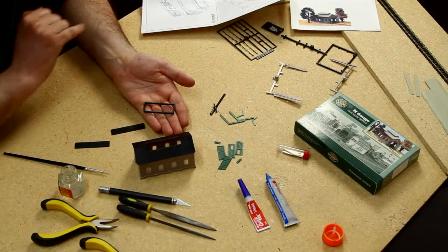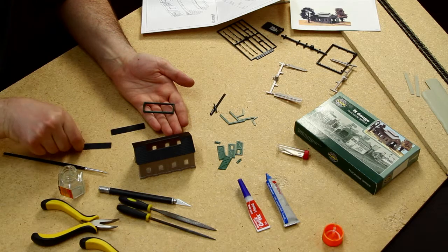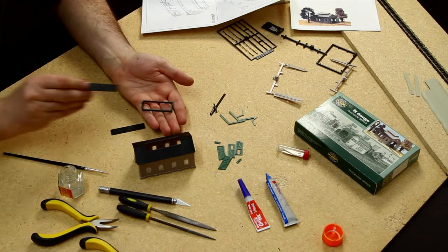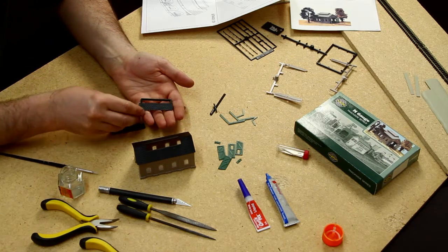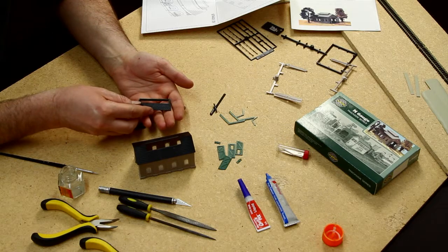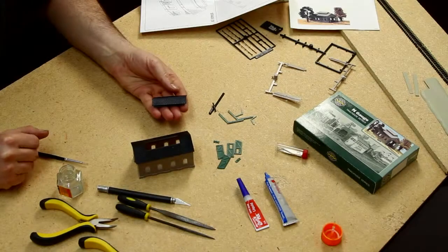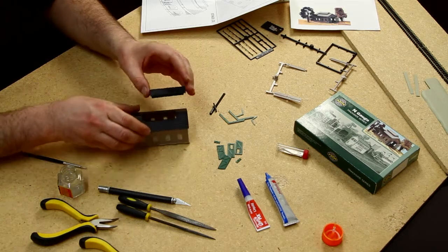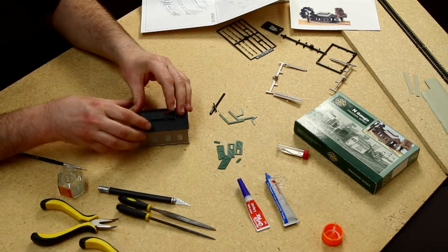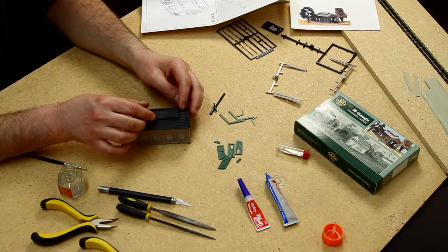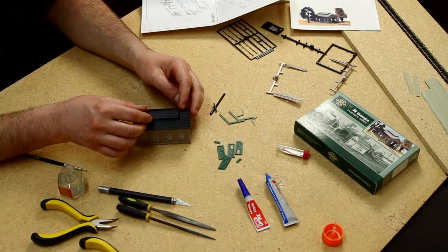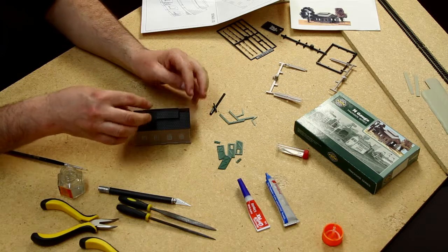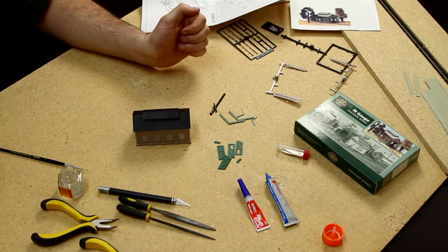Once you have these four sections glued together, you can glue on your roof sections. Once you have glued on your roof sections, you can now slide it into your roof slot and glue in place.